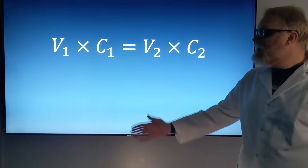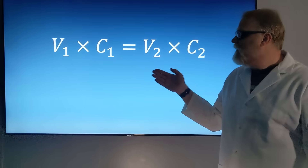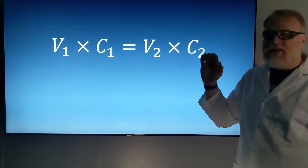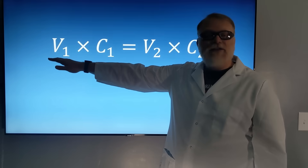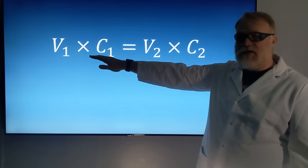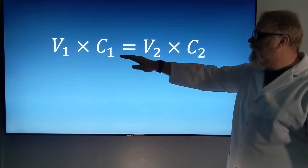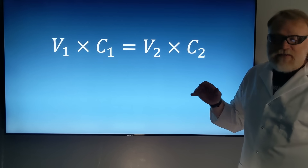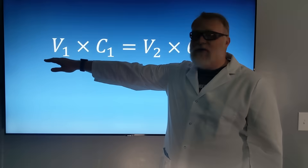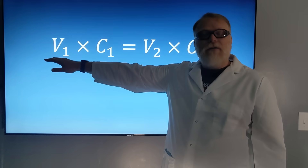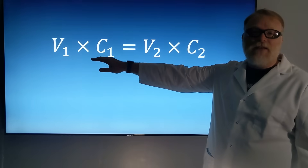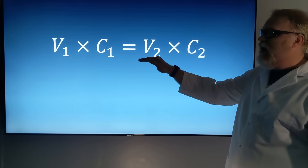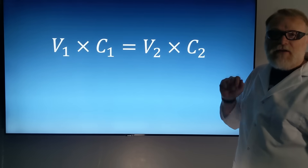There is an equation — the dilution equation — it's V1C1 equals V2C2. What we're going to do is take our initial volume and our initial concentration and compare it to our new volume and our new concentration. In this case, volume 1 is our unknown; we don't know how much of our concentrated sample we need to make a new volume at a smaller concentration.